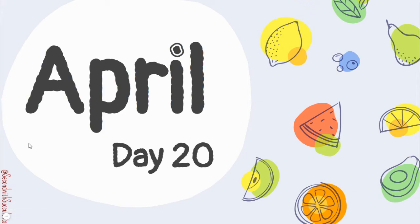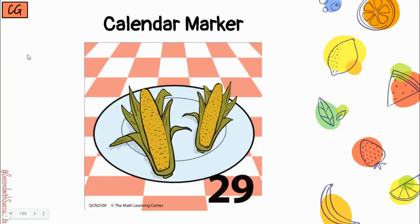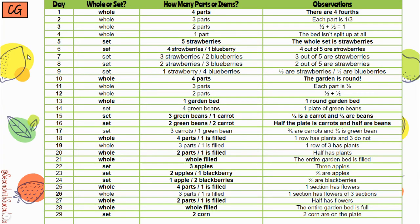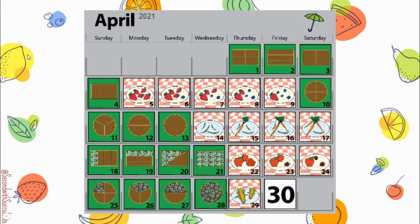Hello second grader, welcome back to April Number Corner. Let's take a look at today's calendar marker. This time it's the 29th, and this is a set again. I see there are two corn on the cobs on the plate, so two corns are on the plate. Let's add this to our calendar observation for the month.